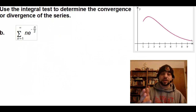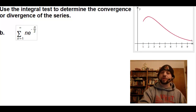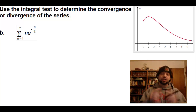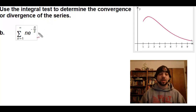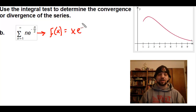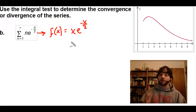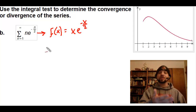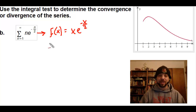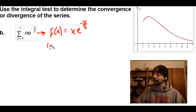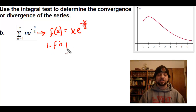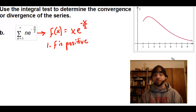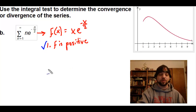In our second example, I'm going to actually write out the three conditions rather than just think about them. If we turn our series into a function, f of x equals x times e to the negative x over 2. I've drawn a graph so you can see what this function looks like. Our first condition is that f is positive — looking at the graph, for the entire interval from 1 to infinity, this certainly is positive. Our second condition is that f must be continuous — again from the graph, starting at 1 and continuing to infinity, this is certainly continuous.